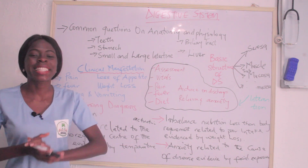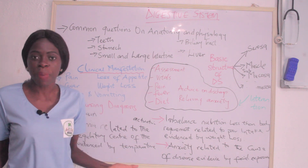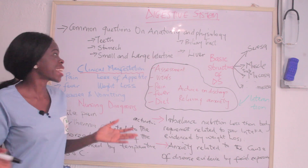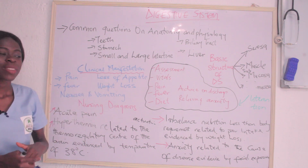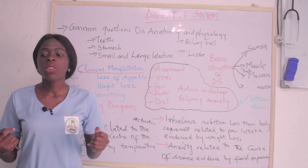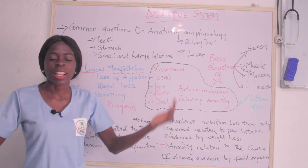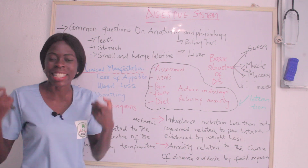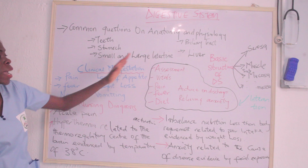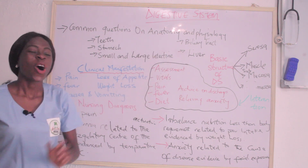The first thing to consider is: what are the common anatomy and physiology questions to expect in the digestive system? The common anatomy and physiology question is: with the aid of a well-labeled diagram, describe the anatomy and physiology of the teeth, the stomach, the small and large intestine, the biliary tract, and the liver. Before disease-specific questions like gastritis, peptic ulcer, or appendicitis come in, there is always an anatomy and physiology question attached. So you have to know all the descriptions for these organs.